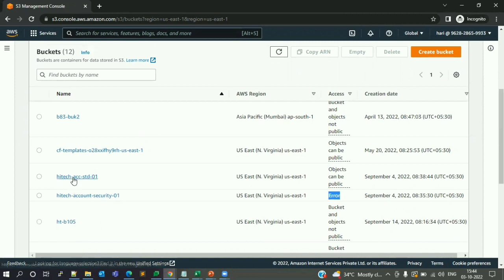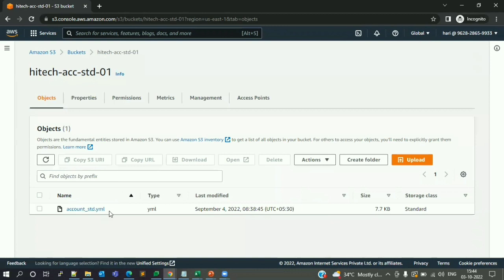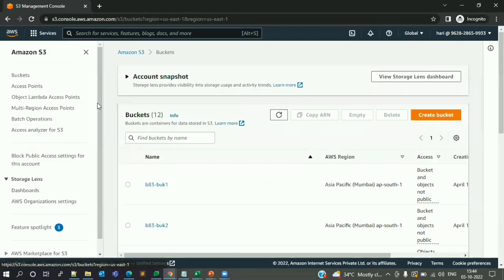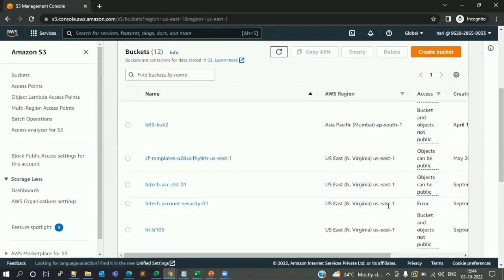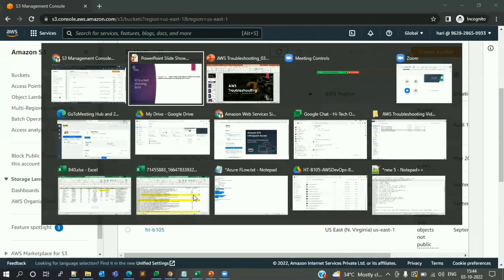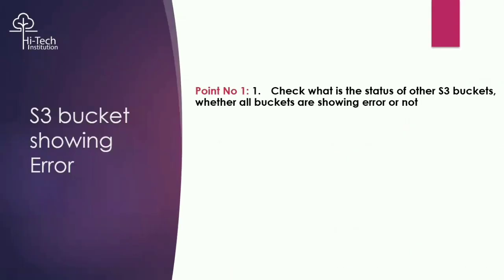When I go to another bucket - account standardization - I am able to see the content. There is no problem with that. Only the security bucket shows the error. So the conclusion for step one: only one bucket, the security bucket, is currently showing the error. Since that bucket is used in our organization for storing sensitive content, we are going to troubleshoot that specific bucket.